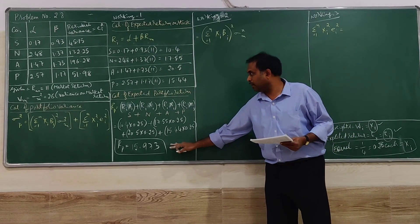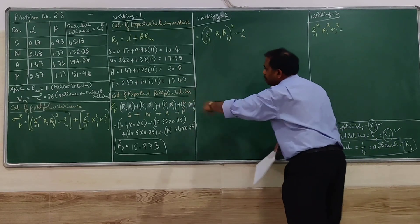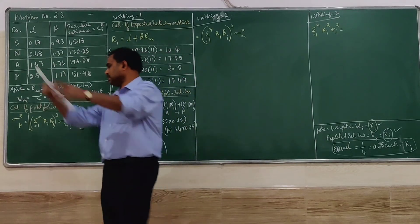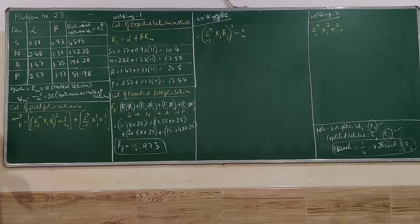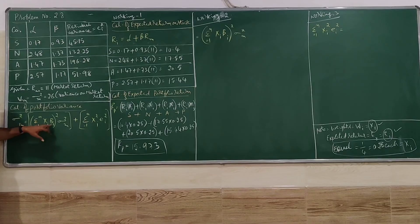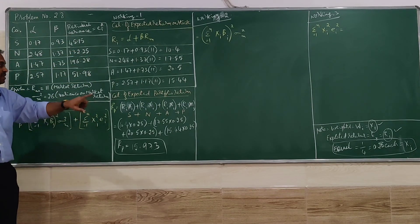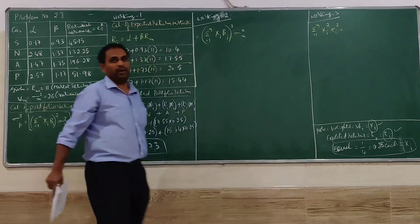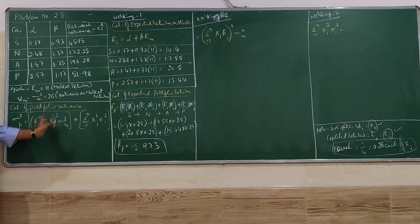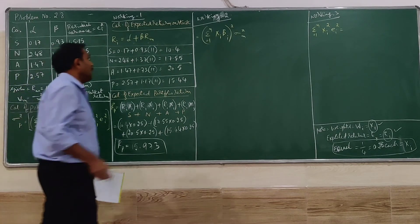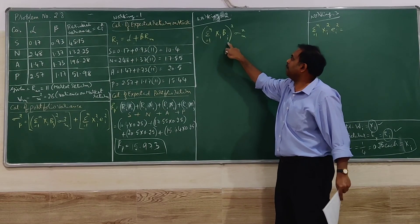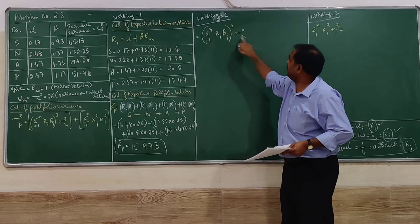That is the first part of the question — portfolio return. The second part is calculation of portfolio variance. Variance is standard deviation squared. The formula for portfolio variance is: summation of (XI × BI) squared multiplied by the variance of market, plus summation of XI squared × BI squared where BI squared is the residual variance. Instead of working together, the first portion I will work in Working 2 and the second portion in Working 3.